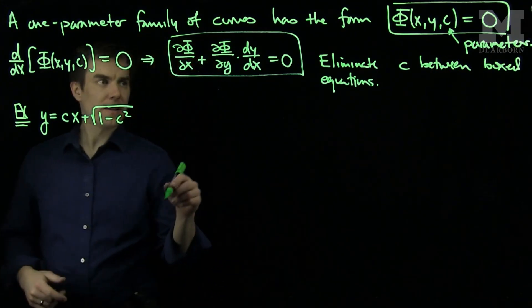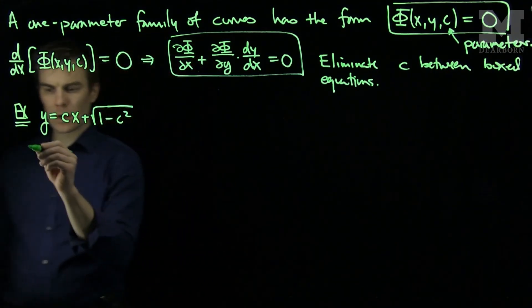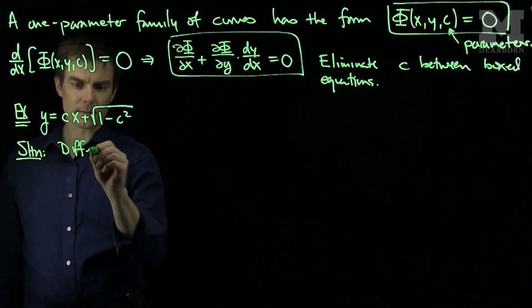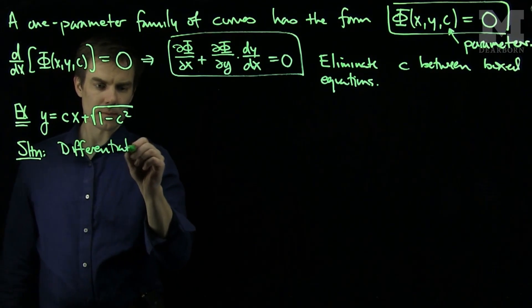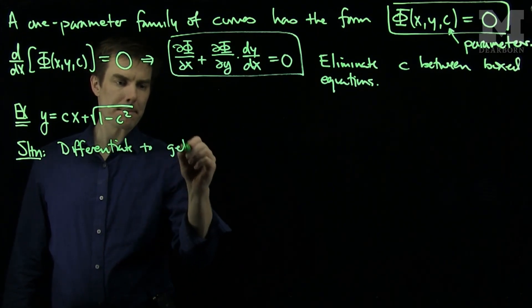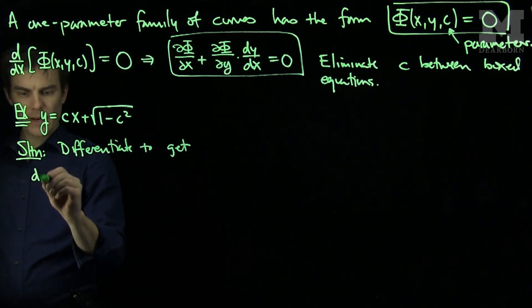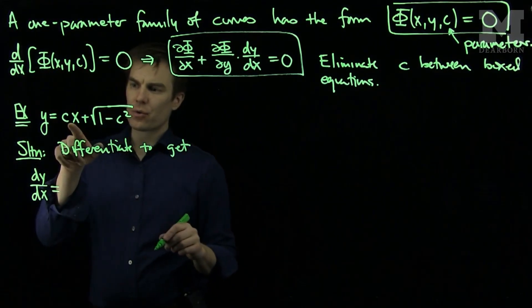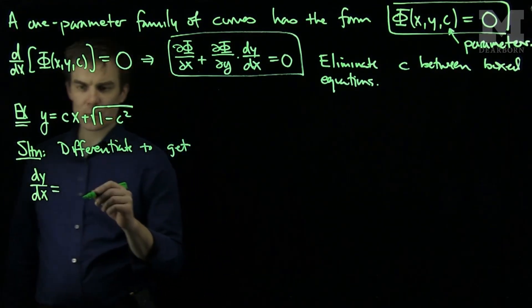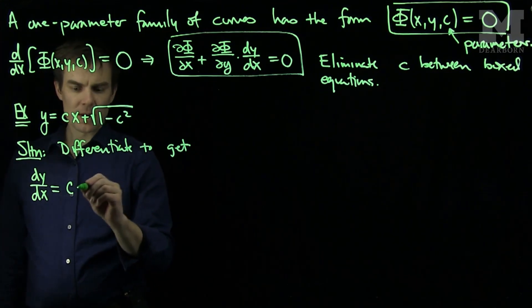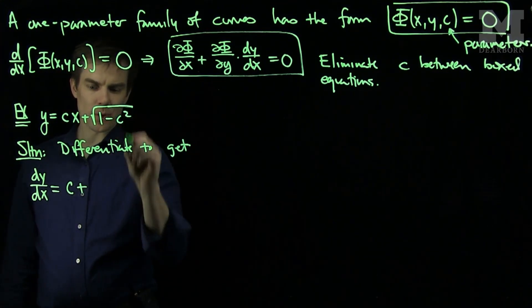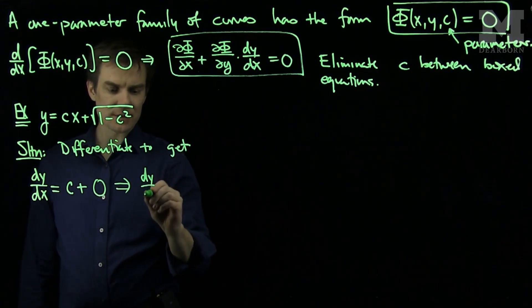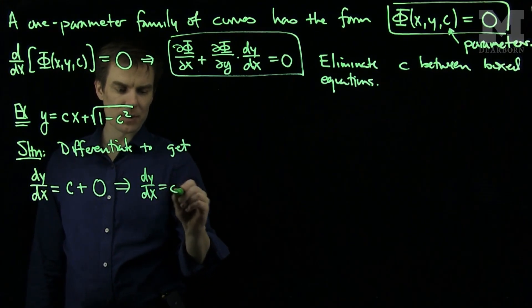We will find the differential equation by differentiating to get dy/dx. The derivative of y is dy/dx, the derivative of cx is c, and the derivative of √(1 - c²) is zero because that's a constant. So dy/dx = c.